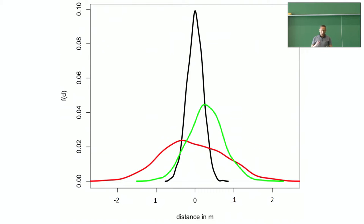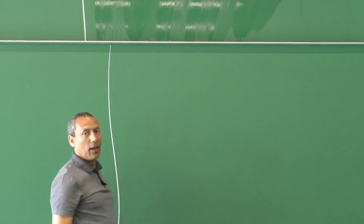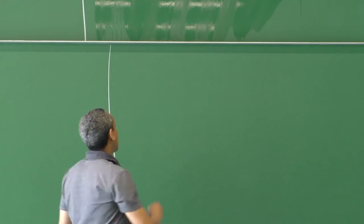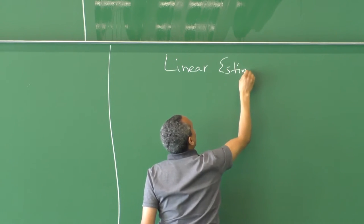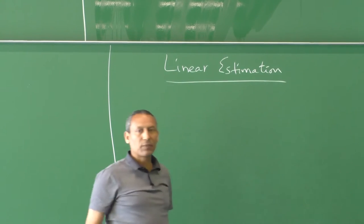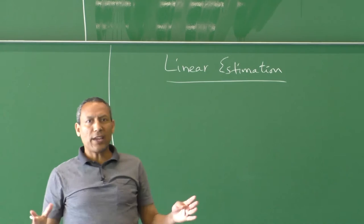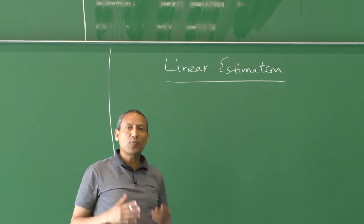Regardless of how unreliable a measurement system is, it can always be useful if combined with other measurement systems, as we will see later on. By the combined effort, our main aim is to reduce the overall variance or uncertainty. A good estimation system is one which yields the smallest variance. Having motivated this, we are now going to establish the mathematical basis for linear estimation.